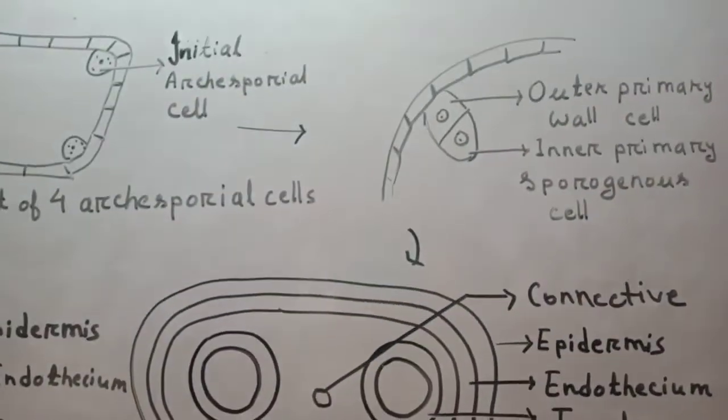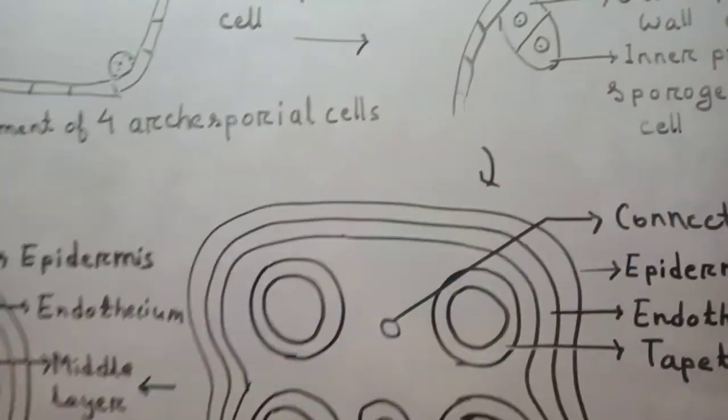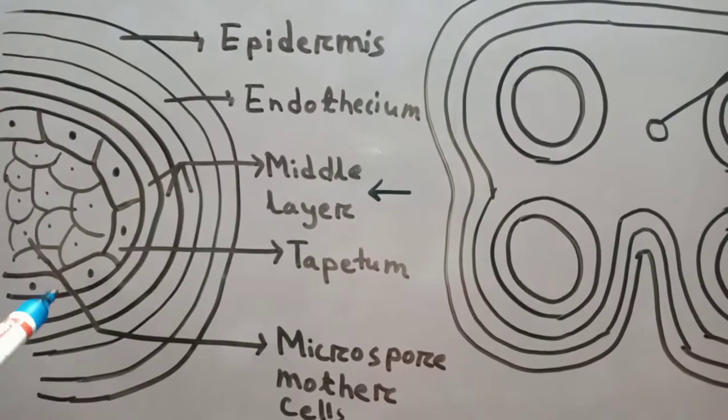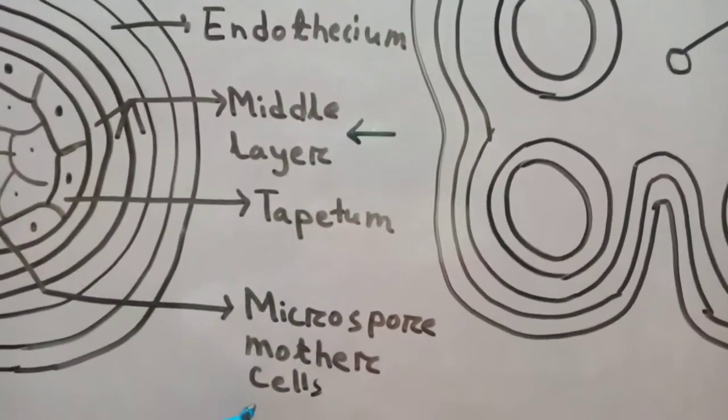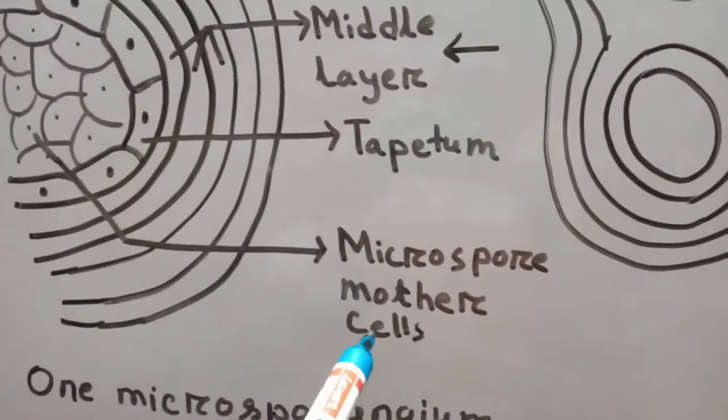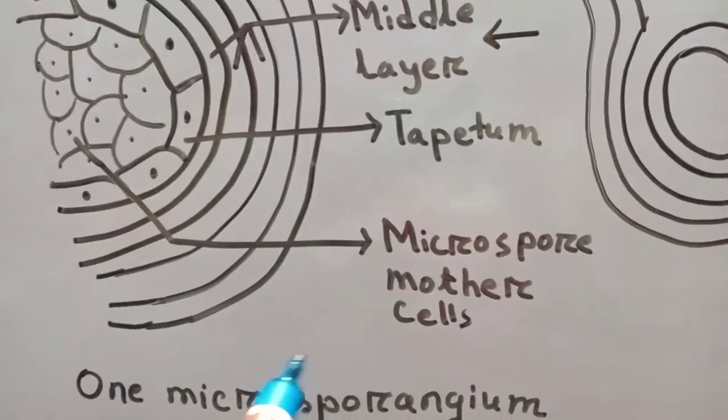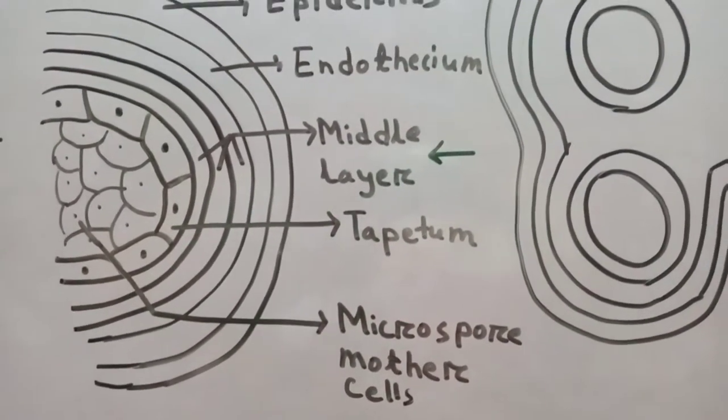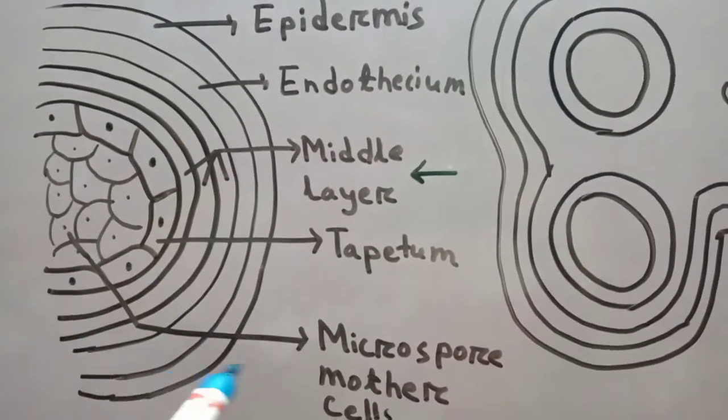Each cell of the sporogenous tissue now behaves as microspore mother cells or pollen mother cells.